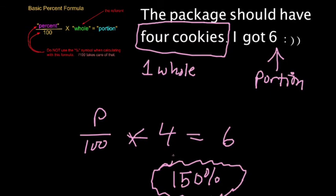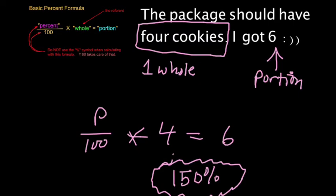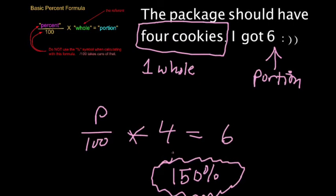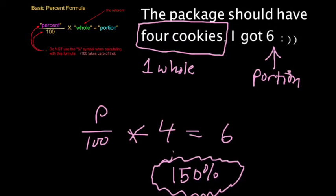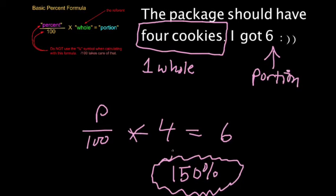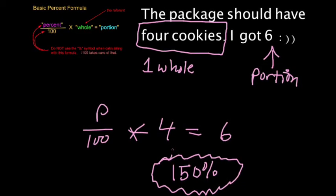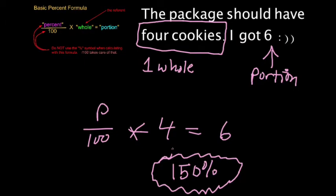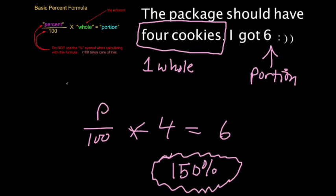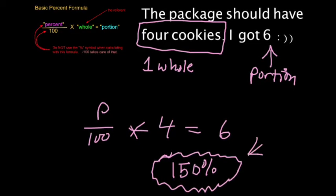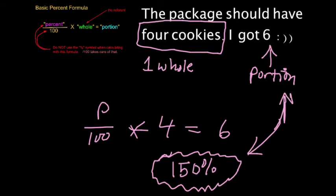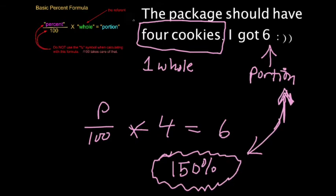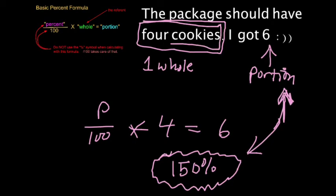So percents are not limited to the range 0 to 100. They can go above 100. I could have 1,000 percents. That would mean I have 10 whole items, however we define our whole. A percent above 100 just means that my portion size is bigger than what represents one complete set or one whole.